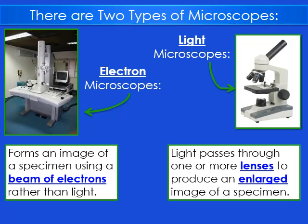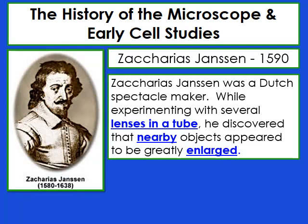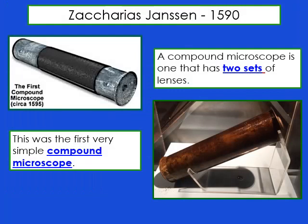Let's talk about the history of the microscope. Zacharias Jansen was a Dutch spectacle maker who made glasses. While experimenting with several lenses in a tube, he discovered that nearby objects appeared to be greatly enlarged, and because of this he is responsible for creating one of the first microscopes. Thanks to him, we have the first compound microscope, which had two sets of lenses.